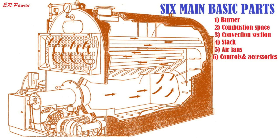There are mainly two types of boiler: one is the fire tube boiler, and the second is the water tube boiler. In this slide you can see the six main basic parts of the boiler: burner, combustion space, convection section, stack, air fans, and controls and accessories.